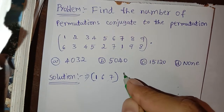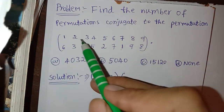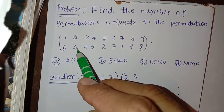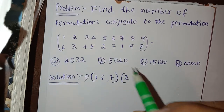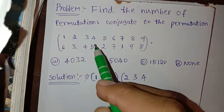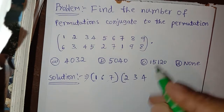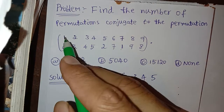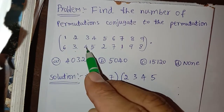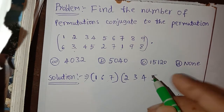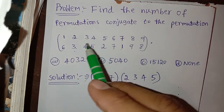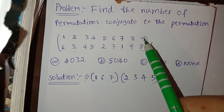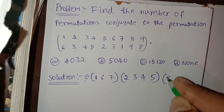This is one cycle. And another cycle we can observe here. For two here three, for three here four, for four here five, for five here two. So (2, 3, 4, 5) is another cycle. And for eight here nine and for nine here eight. So (8, 9) is another cycle.